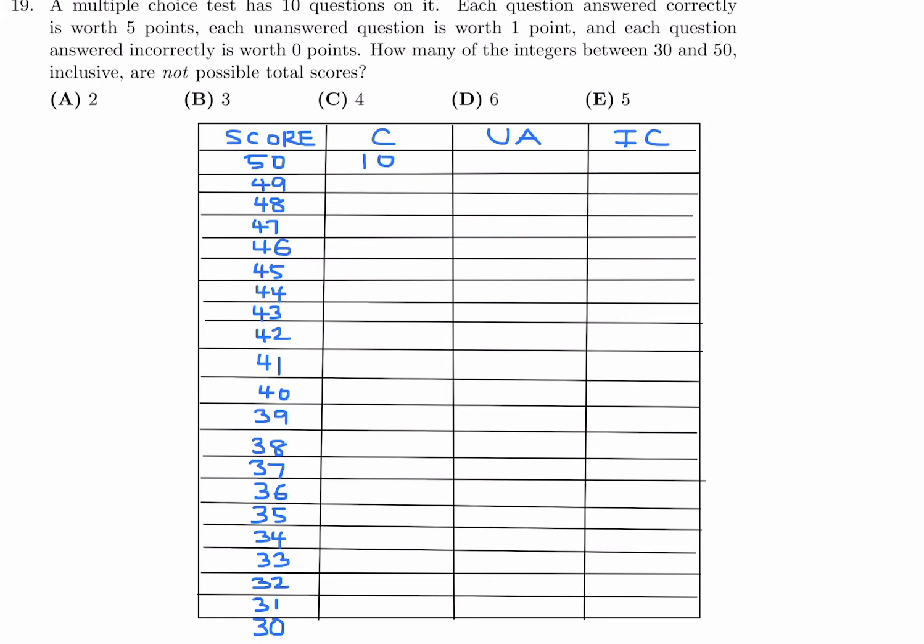Now the multiples of 5 are definitely going to be possible, right? Because 10 correct you get 50 points, 10 times 5. 9 correct would give you 45, and then similarly 8 correct, 7 correct, and 6 correct. So those are pretty straightforward. And then all the other ones you get 0. So that means you got all the other ones, if there are any other ones, incorrect. So here is 0, but here is 1 incorrect, 2, 3, and 4. So those ones are possible.